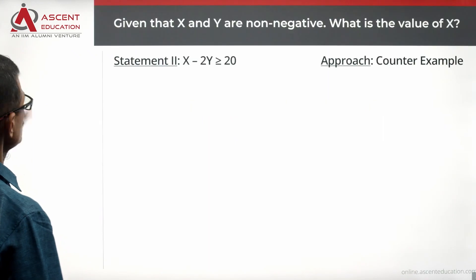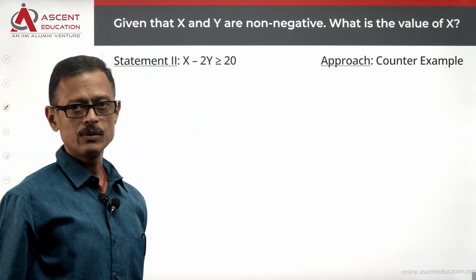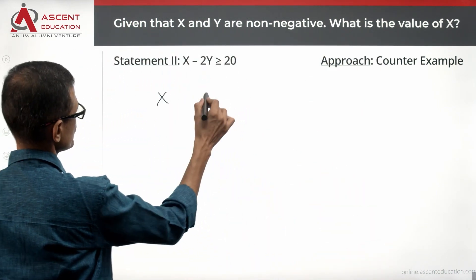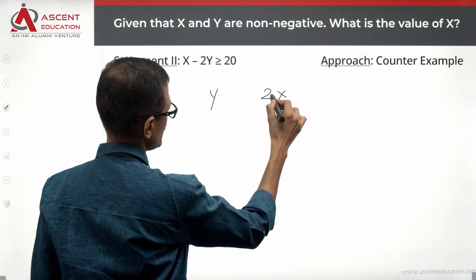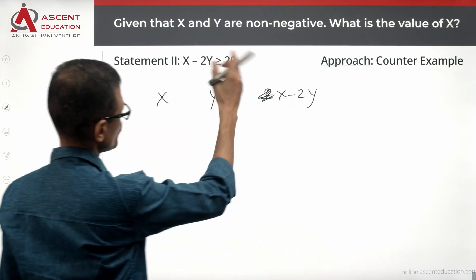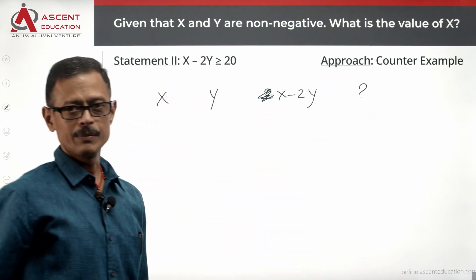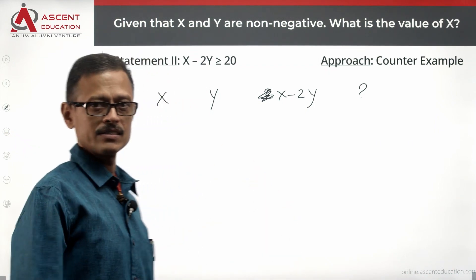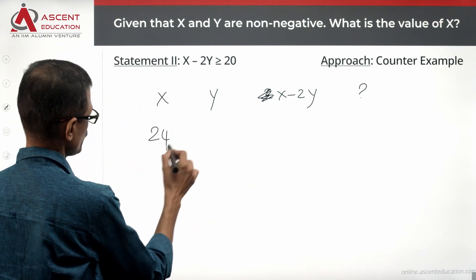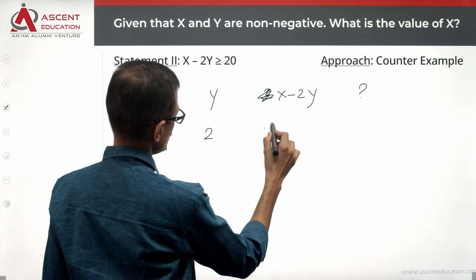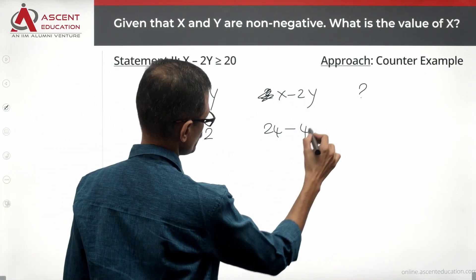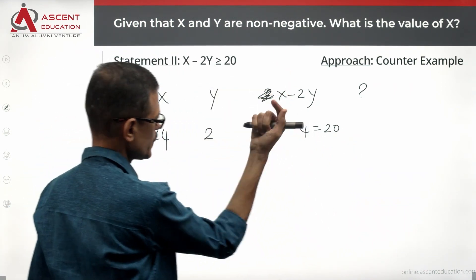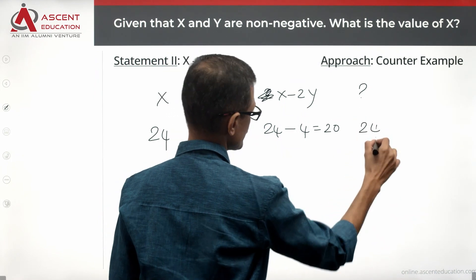Now take a look at Statement 2 alone: x minus 2y is greater than or equal to 20. Again, we use a counter-example. Let x = 24 and y = 2. Then x minus 2y equals 24 minus 4, which is 20 — satisfying the condition. So x is 24 in this case.